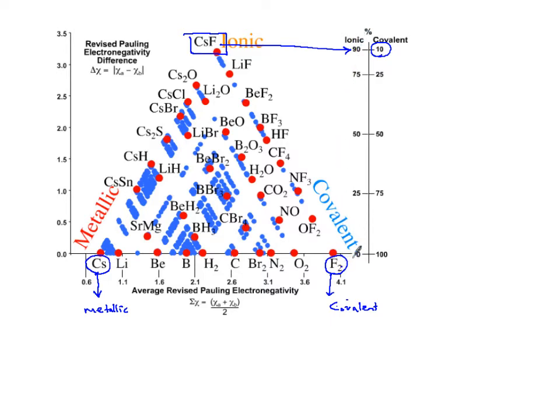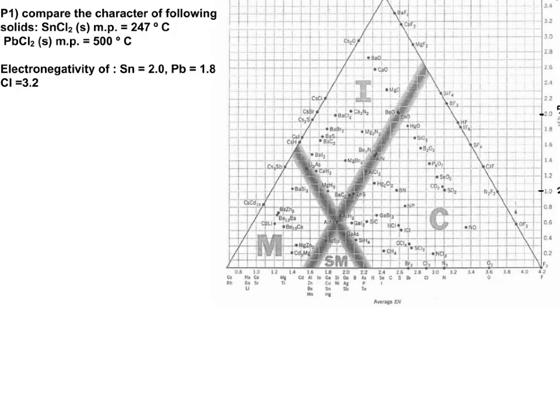On the other hand, we have compounds that are 100% covalent. Now, let's look at an example of how to use this triangle. I'm going to compare two compounds, tin 2 chloride versus lead 2 chloride. Melting point of tin 2 chloride is lower than lead 2 chloride, so that already gives me a hint that tin 2 chloride should be more covalent.